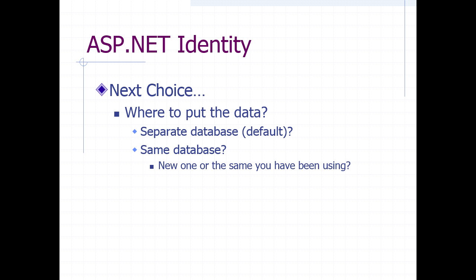The question is: we probably already have a database for our own project data — customers, orders, whatever — and by default the system will create a separate database just to hold the security information like users and roles. So your choice is: do you want two databases or one? If one, do you add the security stuff into your existing tables, or should you have planned ahead and done it all in the security tables from the beginning?